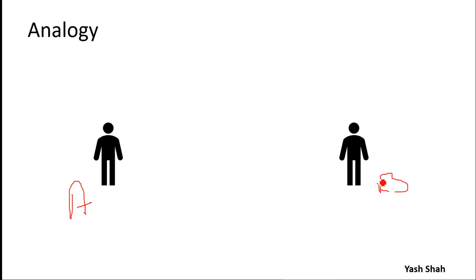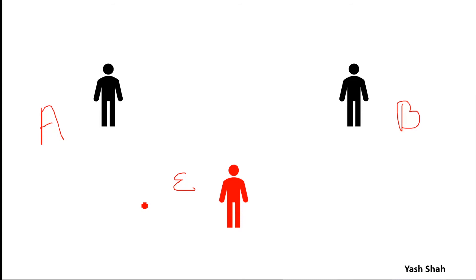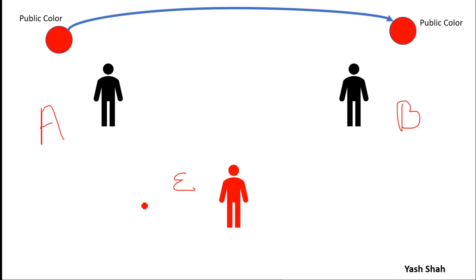I have taken a color analogy to explain this — this is not literally what happens, but the analogy helps. There is Alice, Bob, and Eve the attacker. Alice wants to send the key to Bob and Eve is in the middle. Alice selects a public color — say red — and sends it to Bob. The attacker also knows that the red color has been sent.